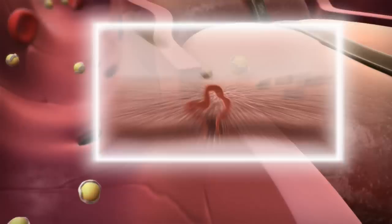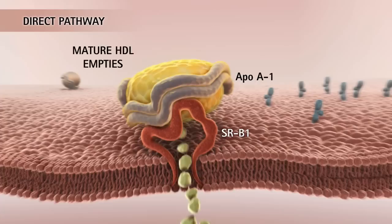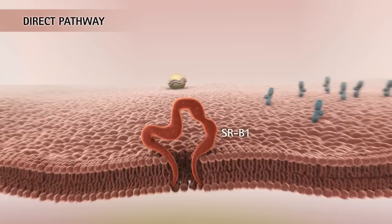Mature HDL delivers cholesterol to the liver through two pathways: a direct pathway and an indirect pathway. Through the direct pathway, HDL interacts with the SRB1 receptor on the liver, allowing the delivery of cholesterol. The resulting lipid-poor HDL particle can then be recirculated to repeat the process of reverse cholesterol transport.